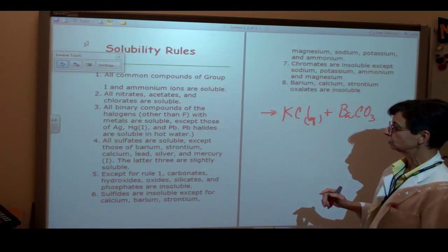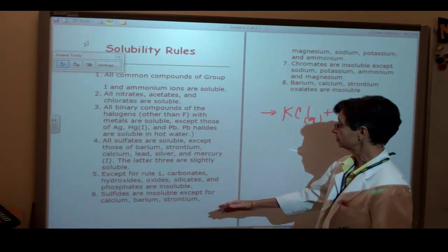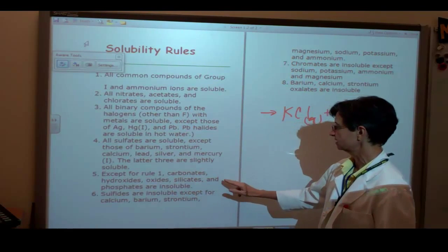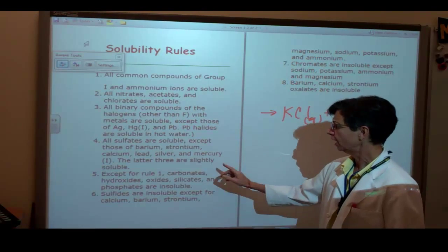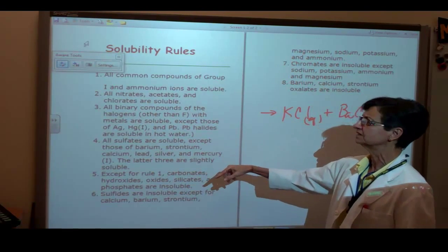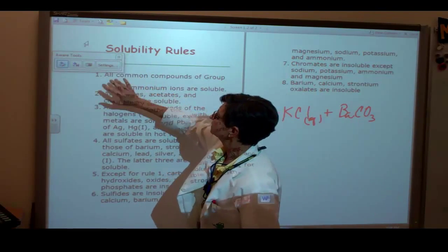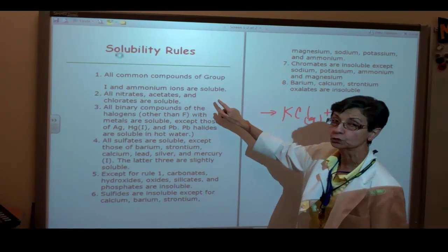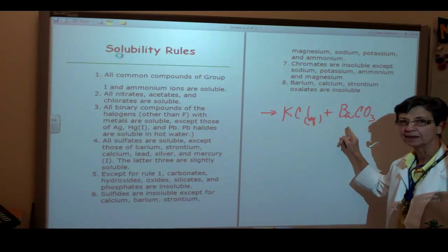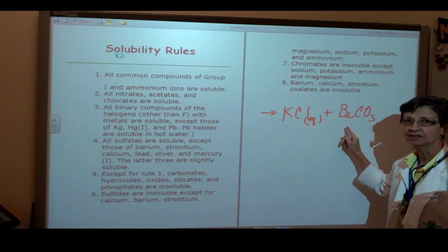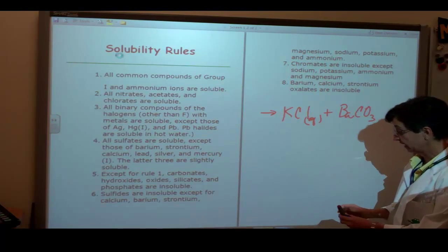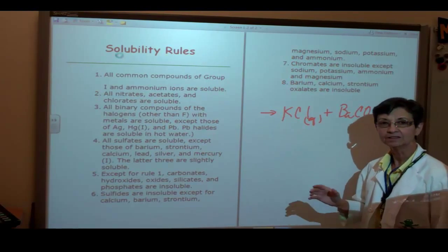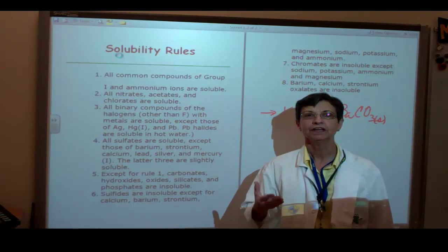Then I am going to look at barium carbonate. You can look up carbonates. It says except for rule one, carbonates, hydroxides, oxides, silicates, and phosphates are insoluble. We got to look at rule one to see what this is saying. Rule one says that all common compounds of group one, this is not a group one compound, it is a group two compound. Therefore, in conclusion, this is the solid.